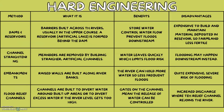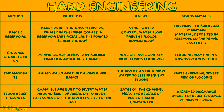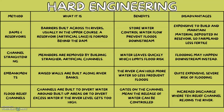Hard Engineering: The first method is dams and reservoirs. Dams are barriers built across the river, usually in the upper course, and a reservoir is the artificial lake that's formed behind the dam. They store water, control water flow and prevent floods happening downstream. However, they are expensive to build and maintain, and material deposited happens in the reservoir, so farmland becomes less fertile.